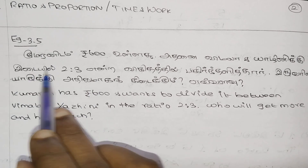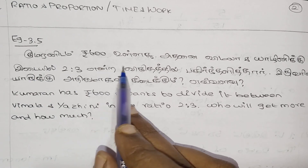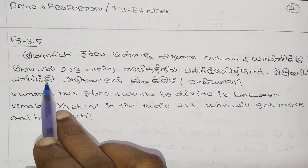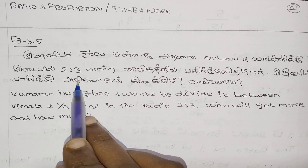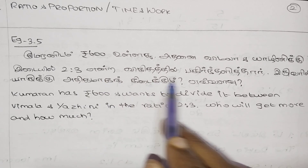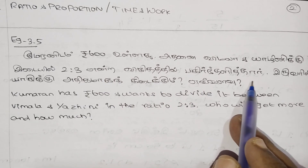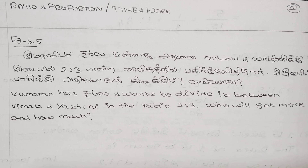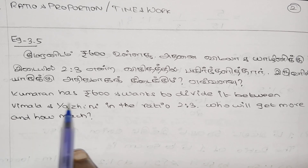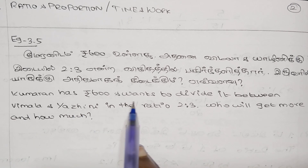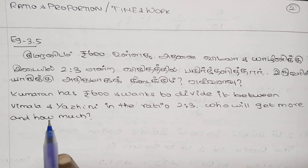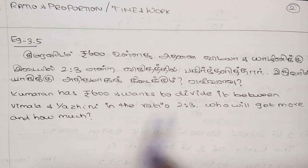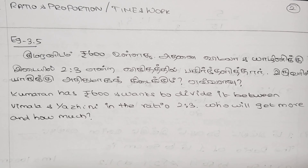Example 3.5: Qumaran has 600 rupees and wants to divide it between Vimala and Yalini in the ratio 2 is to 3. Who will get more and how much?